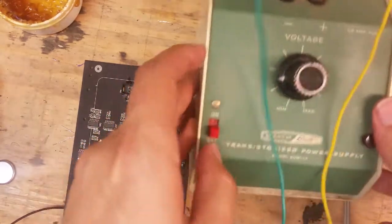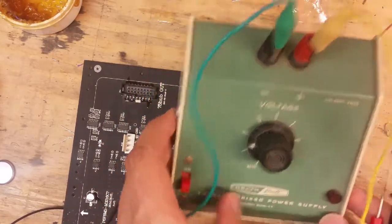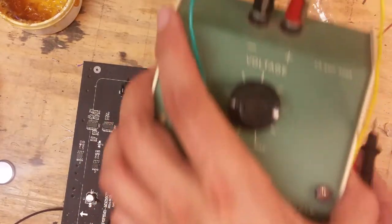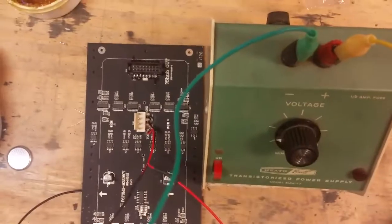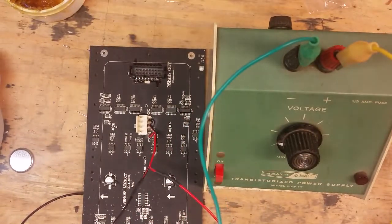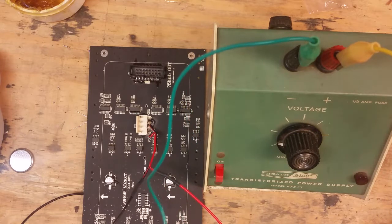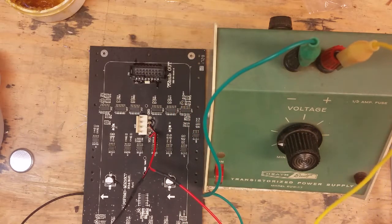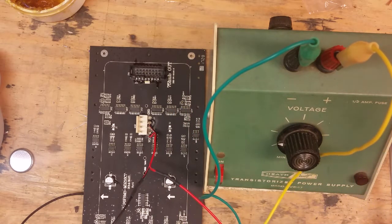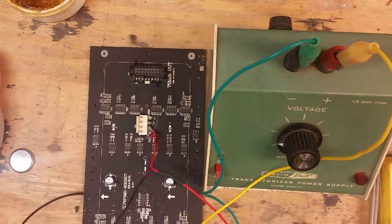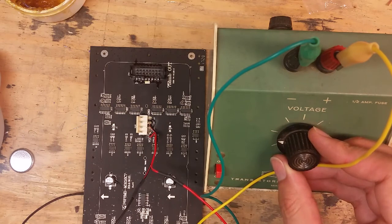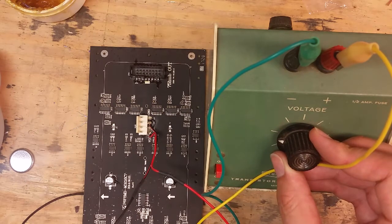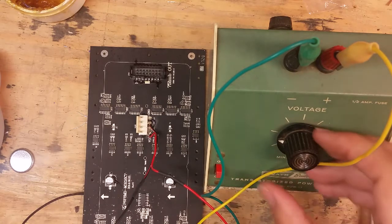It's a transistorized power supply. And it's Heathbuilt, not Heathkit. Okay, so I assume that means that this is something that came reassembled from Heathkit store. You know, it's not current limited. You can only adjust the voltage.